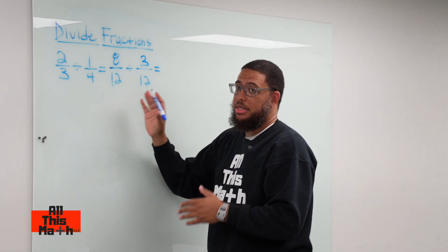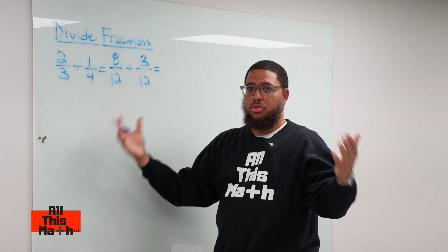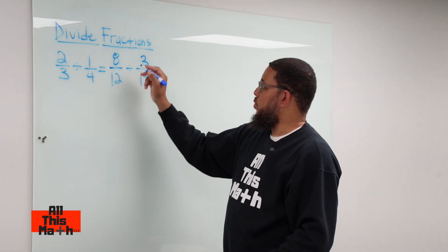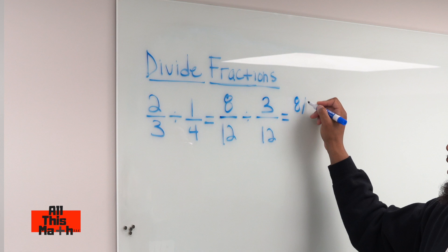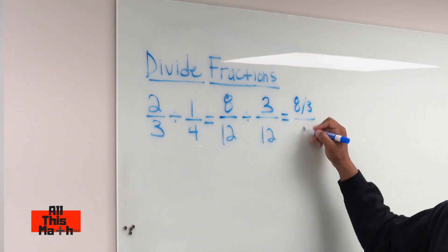Now, because I have common denominators, I can divide horizontally the same way we do when we multiply fractions. If I'm doing 8 divided by 3, that would be 8/3 in my numerator. And 12 divided by 12 is just 1.